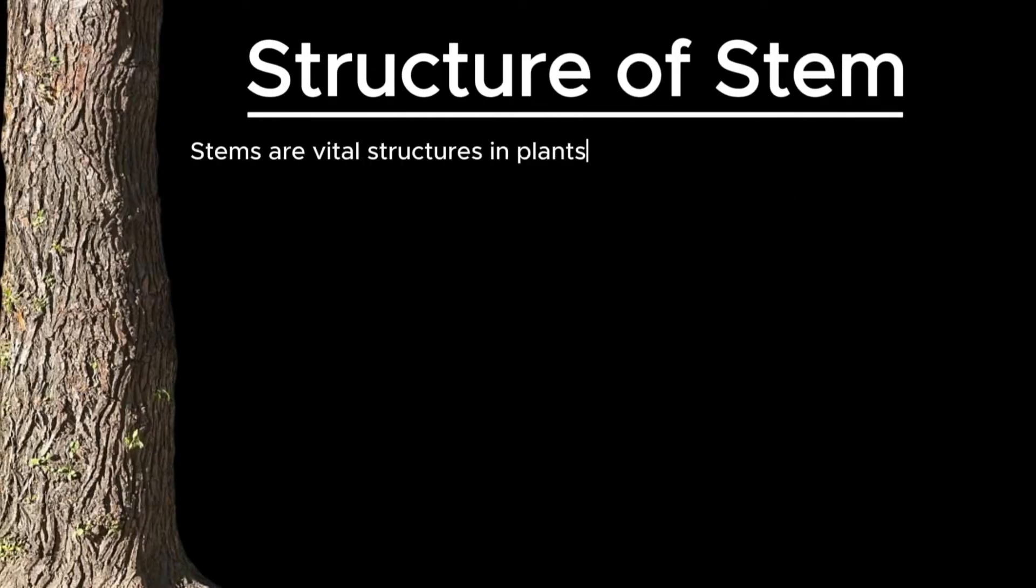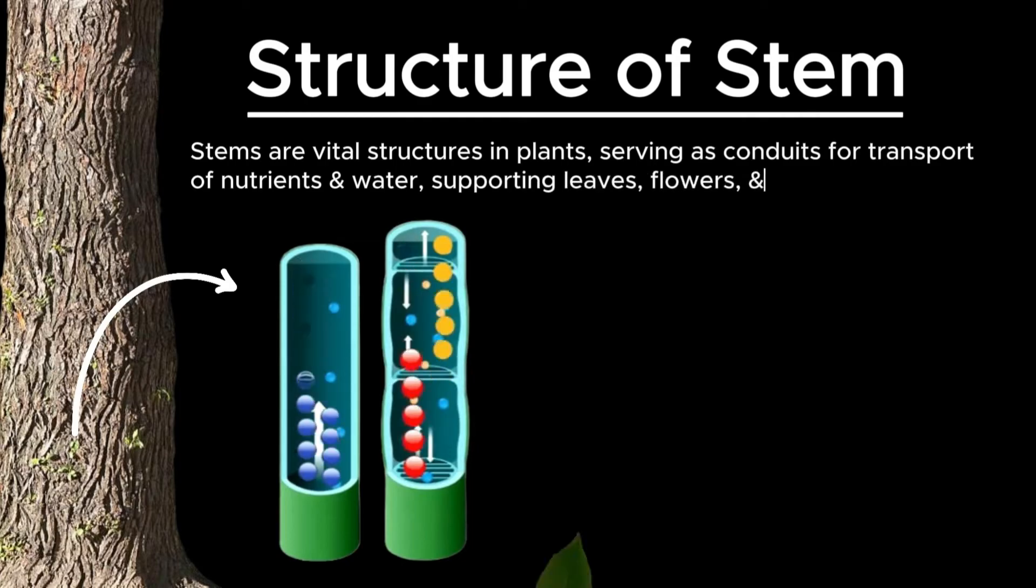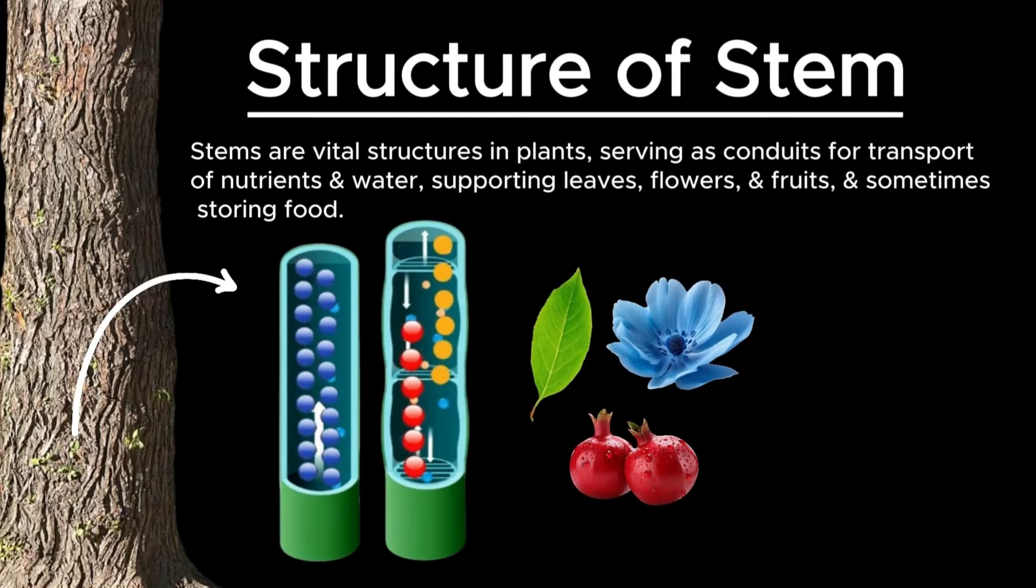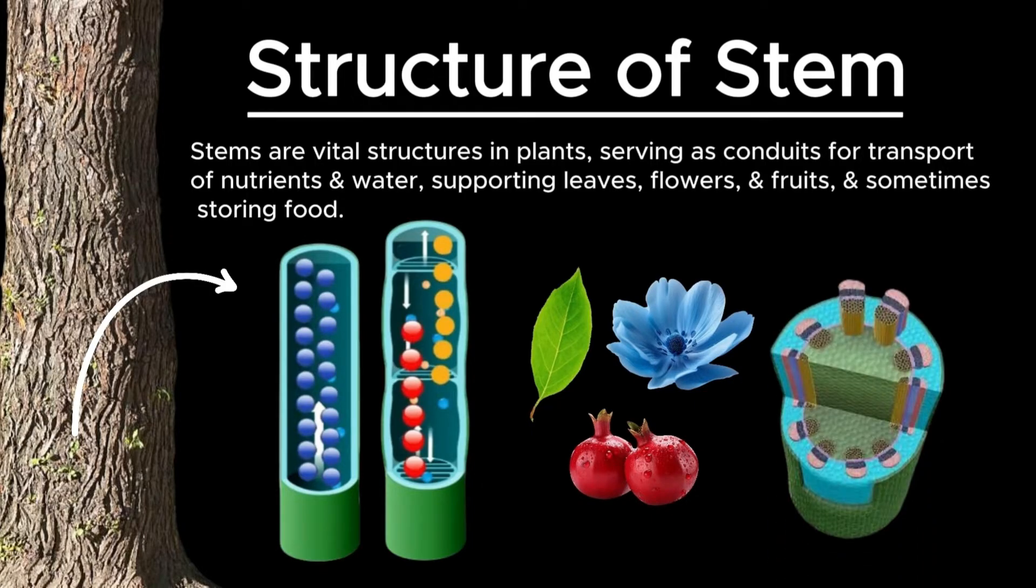Stems are vital structures in plants, serving as conduits for the transport of nutrients and water, supporting leaves, flowers, and fruits, and sometimes storing food. They exhibit a sophisticated internal architecture that enables them to fulfill these diverse functions effectively.